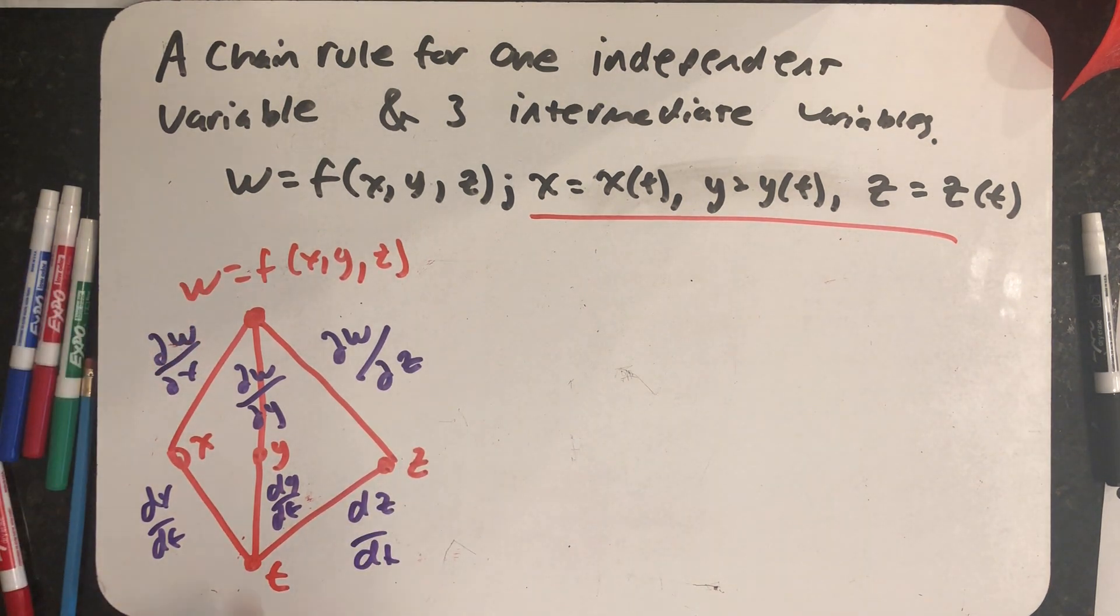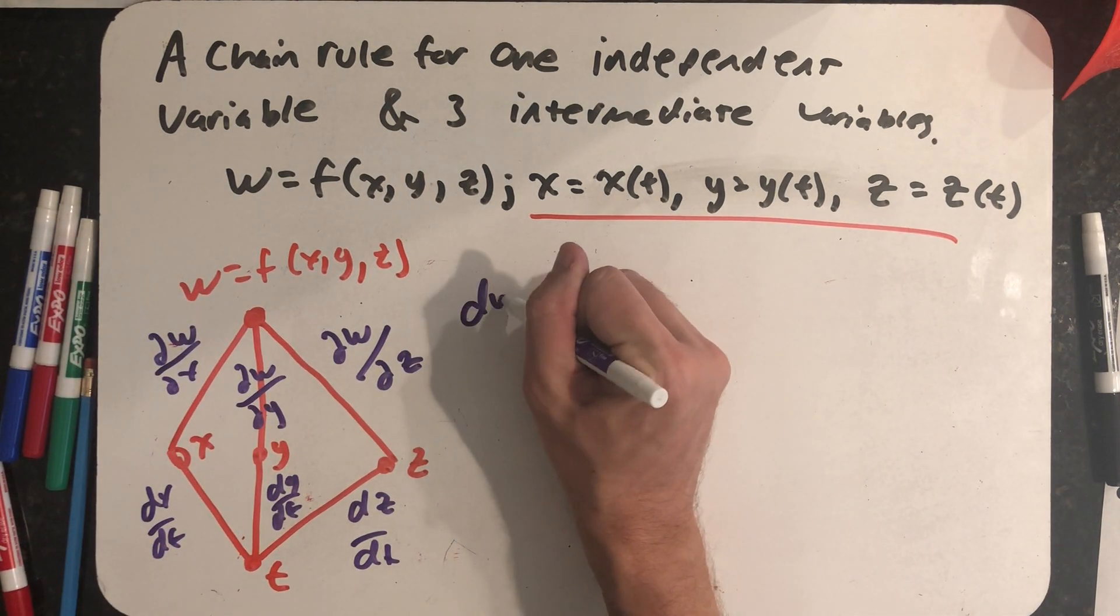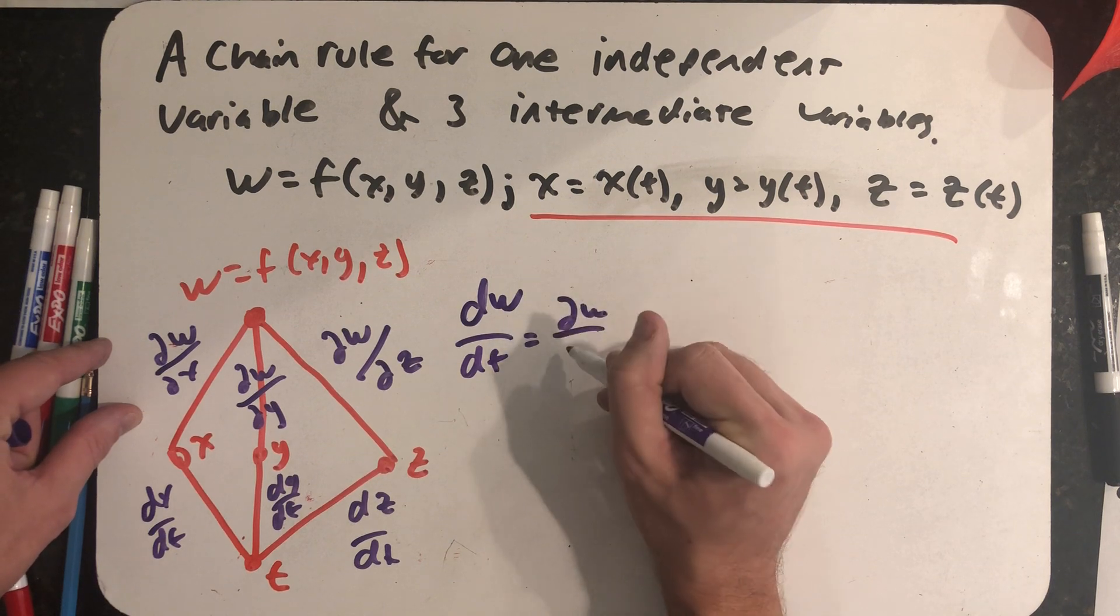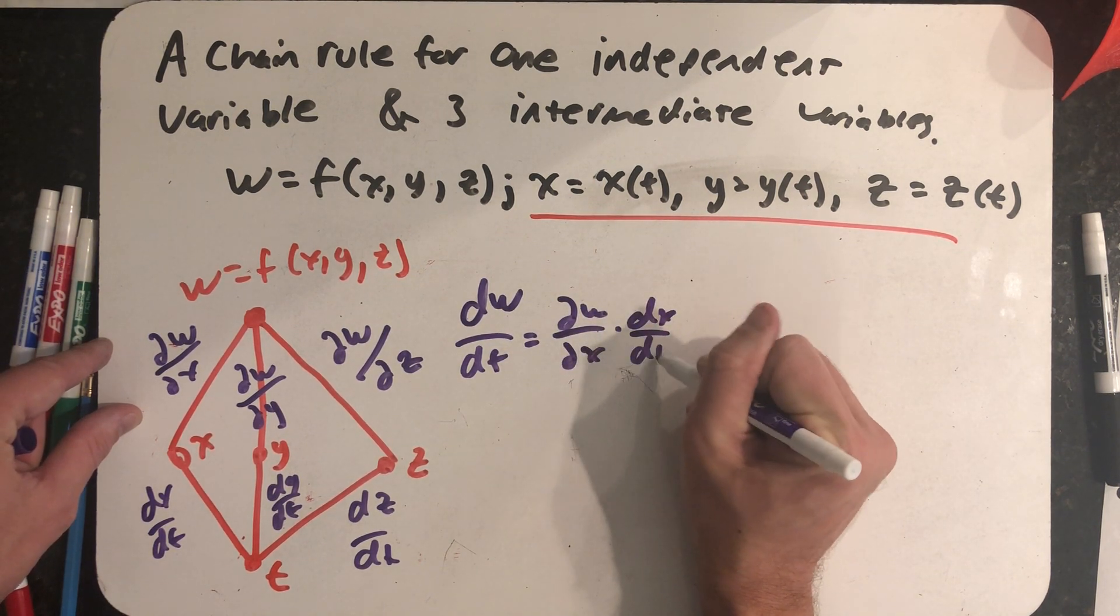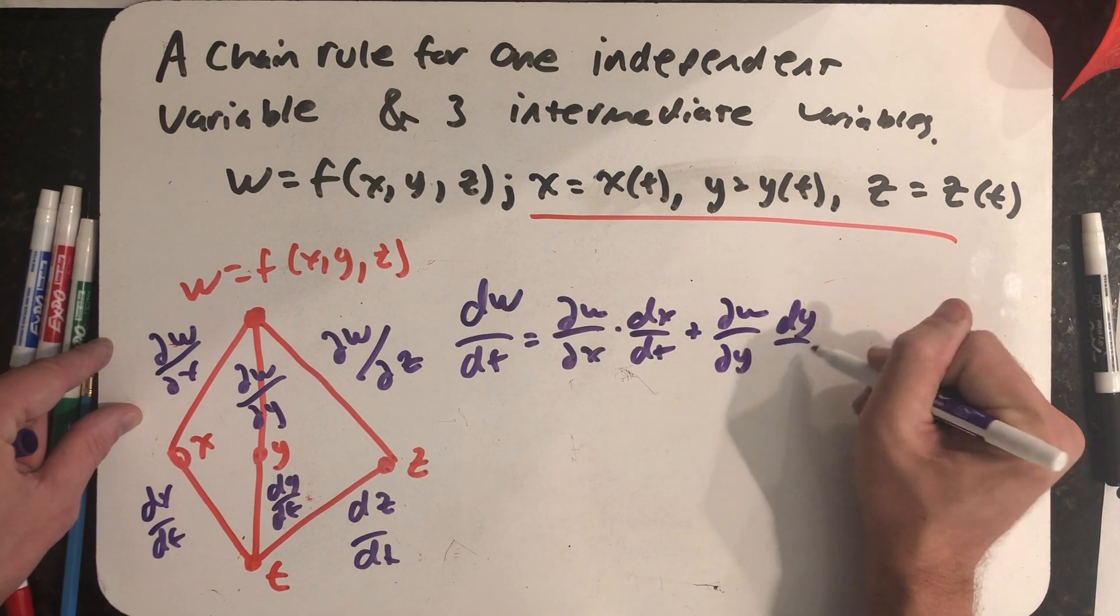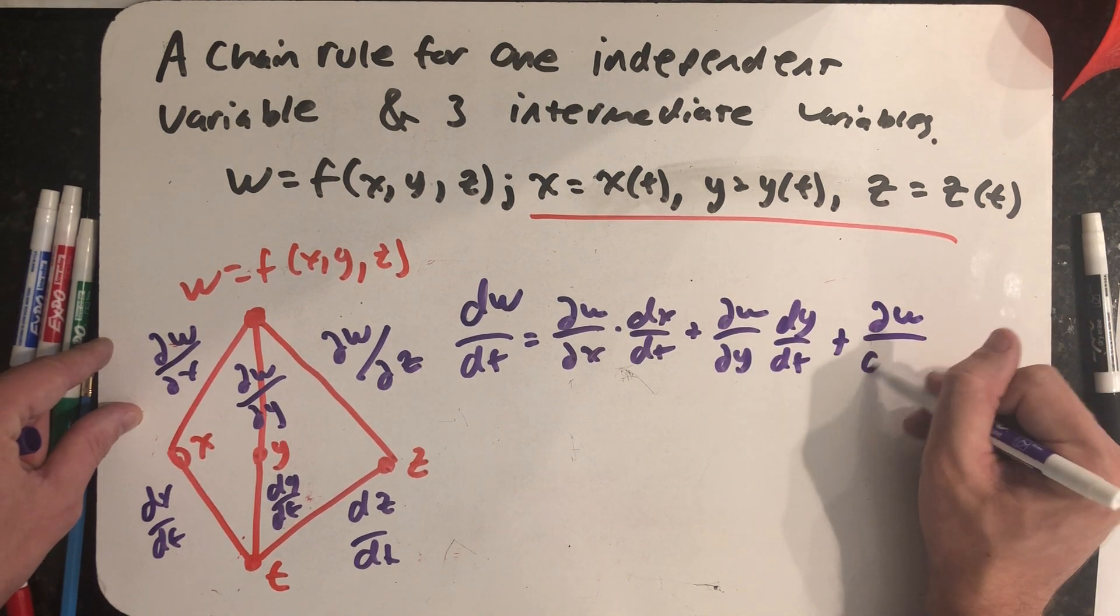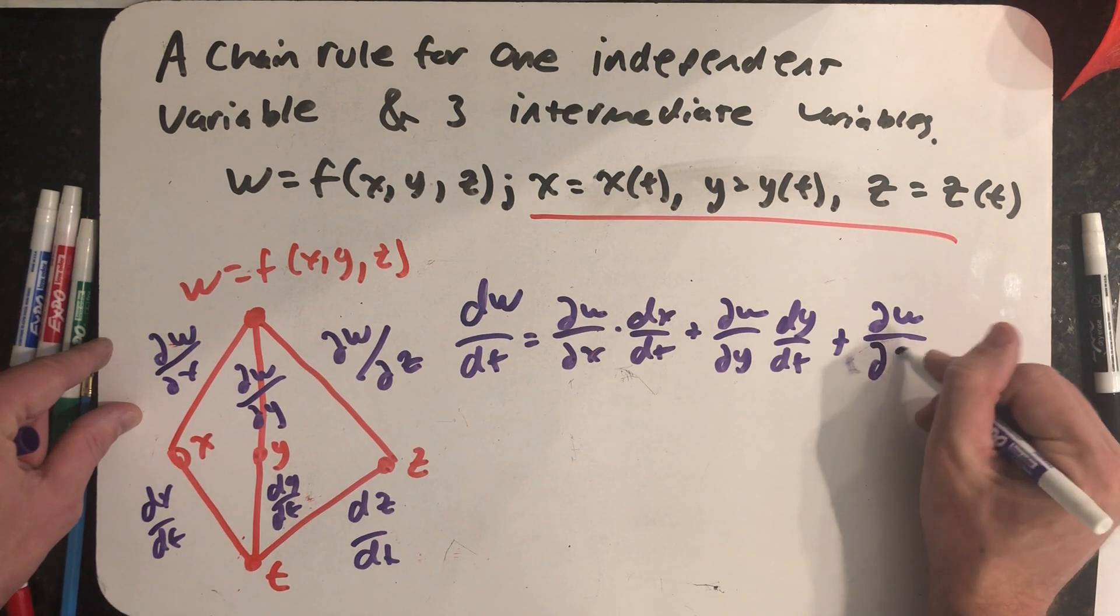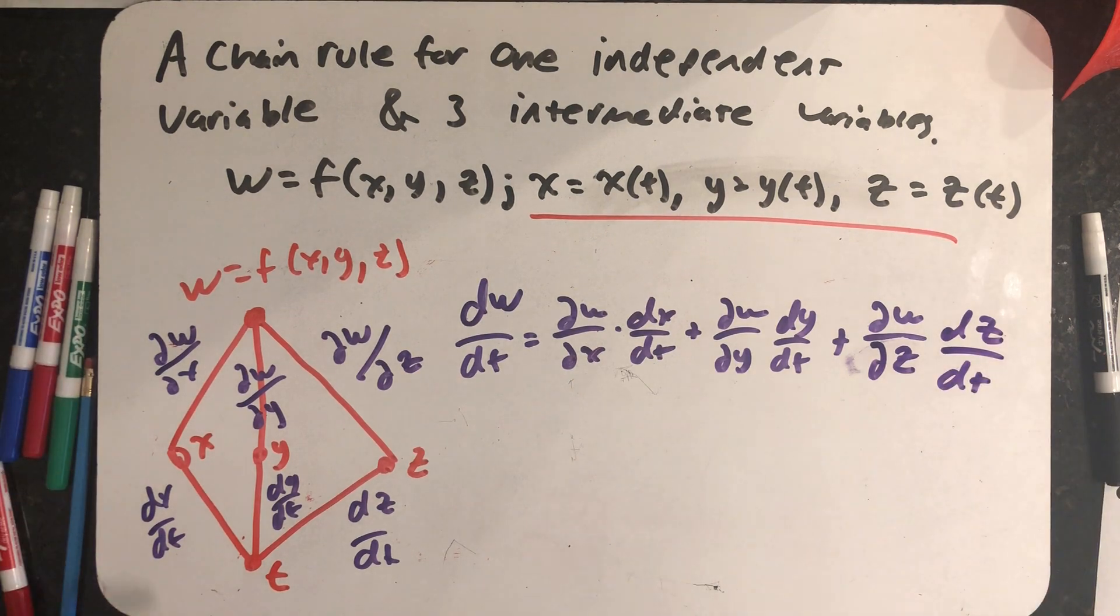All right, well I multiply, multiply, multiply, and I add, add. So here is my chain rule. dw/dt is equal to the partial of w with respect to x times dx/dt plus the partial of w with respect to y times dy/dt plus the partial of w with respect to z times dz/dt. There's my chain rule.